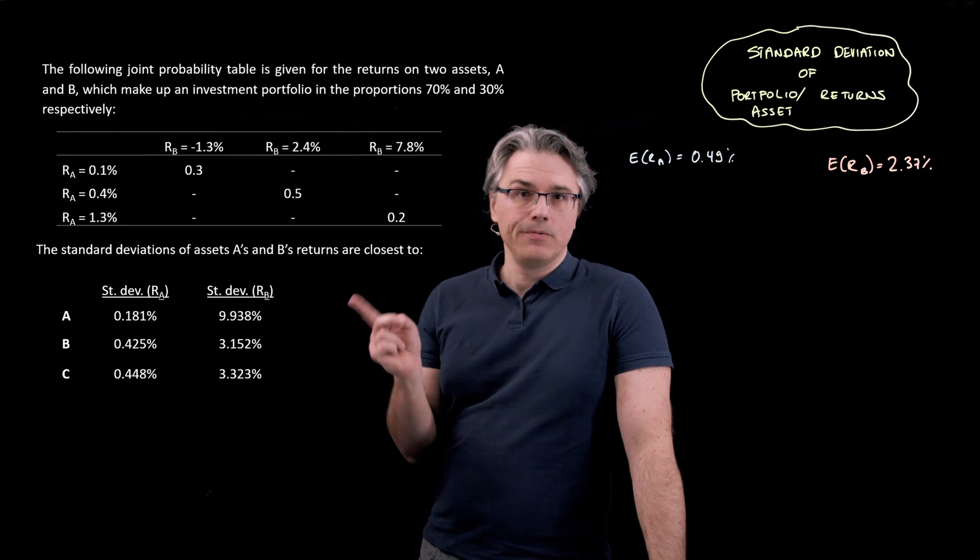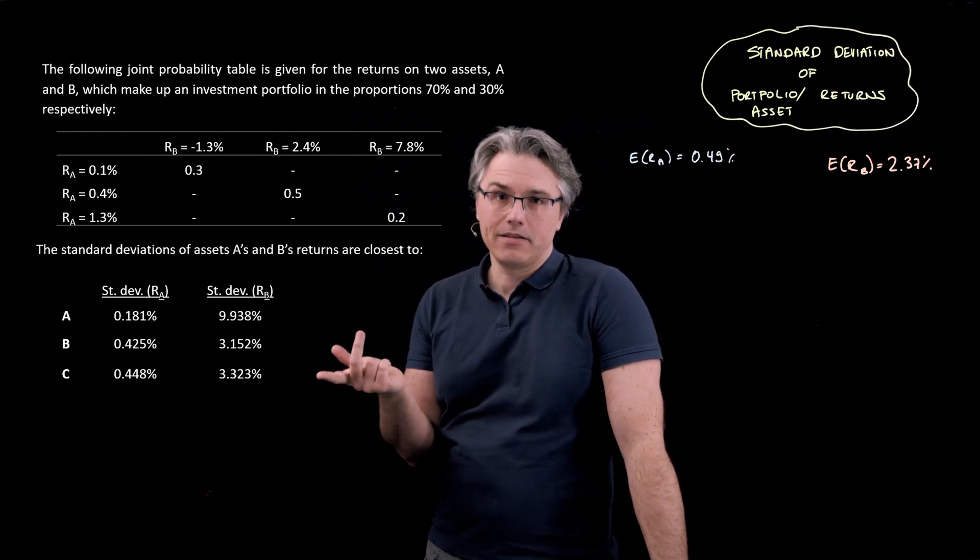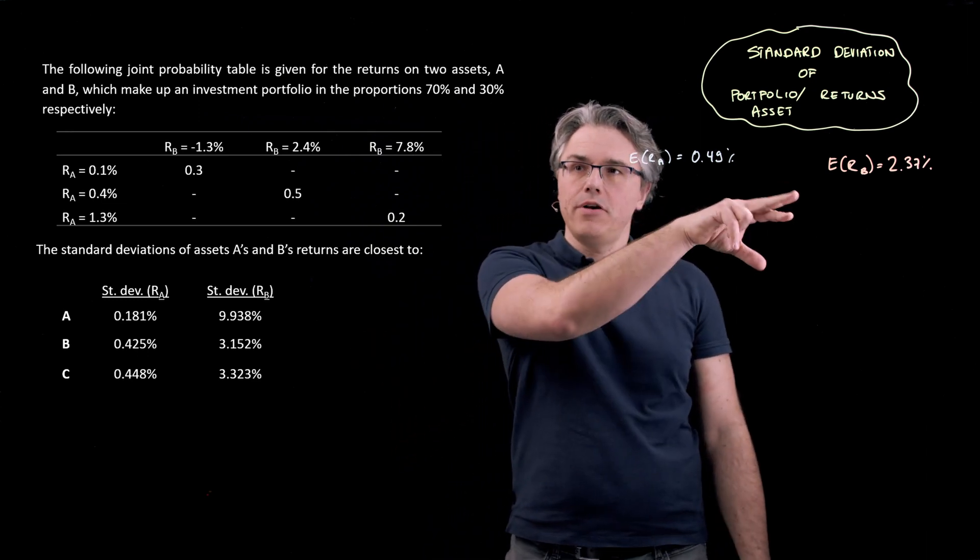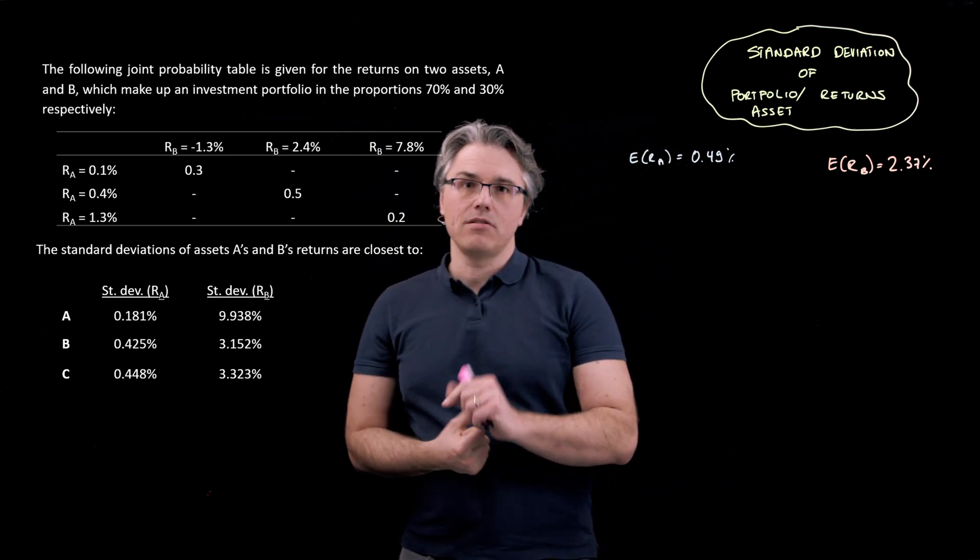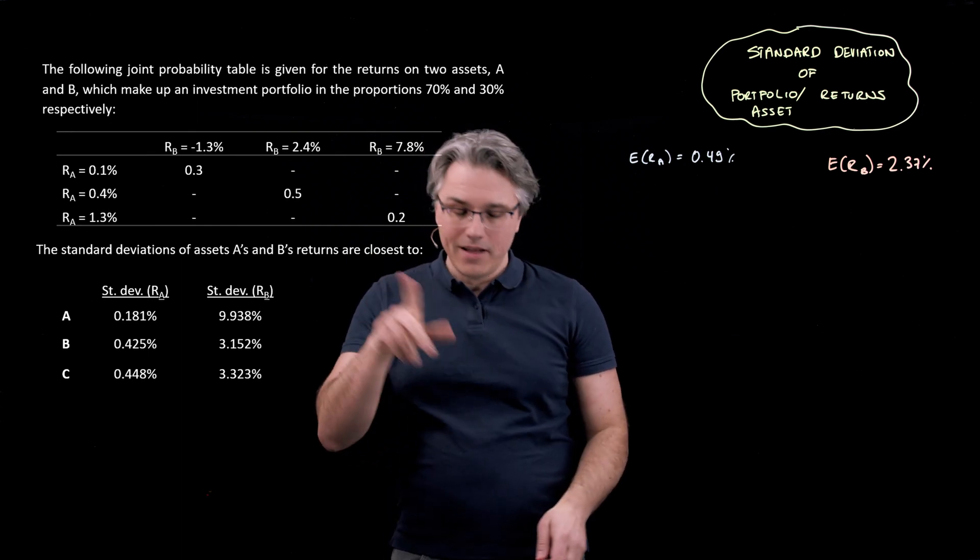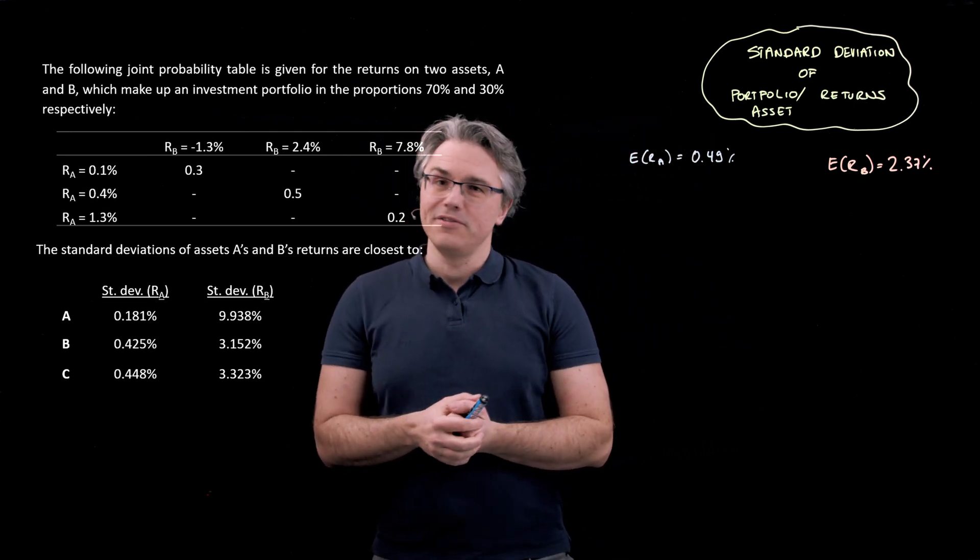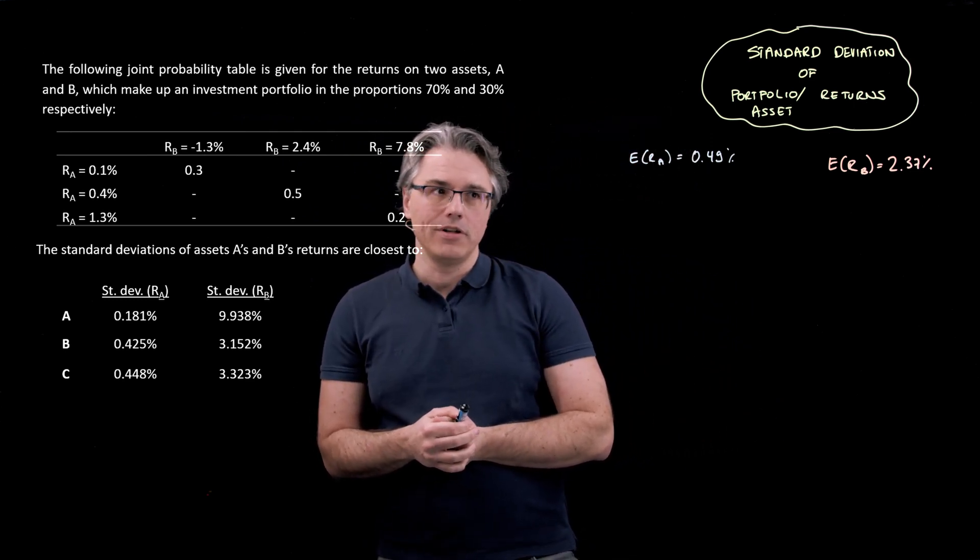And in order to compute this, we'll still need what we did in the previous question. That was the expected returns for A and B. So I wrote these out over here. It's something that we solved for in the prior recording. And now we're going to use it to compute standard deviation. And in the next question, I'm going to use that to compute covariance and correlation.